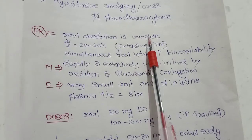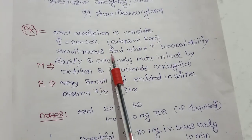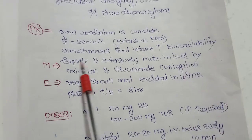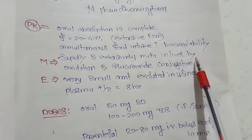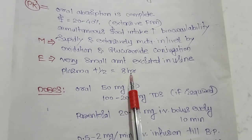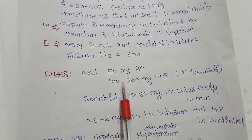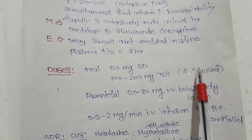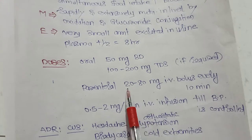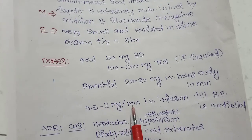Pharmacokinetic properties: oral absorption is complete. Oral bioavailability is 20 to 40% because of extensive first-pass metabolism. Simultaneous food intake increases bioavailability. It is rapidly and extensively metabolized in the liver by oxidation and glucuronide conjugation. A very small amount is excreted in the urine. Plasma half-life is just 8 hours. Orally, start with 50 mg twice a day, increasing up to 100 to 200 mg twice a day if required. Parenterally, 20 to 80 mg intravenous bolus every 10 minutes, or as IV infusion at 0.5 to 2 mg per minute until BP is controlled.